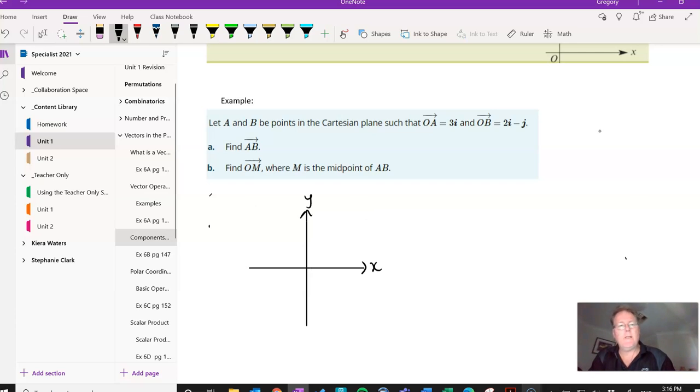First of all, we always lay the axis. So OA is 3I, so we're going to have a vector that's just in the X direction, so there'll be my A point there, vector in that direction, and that will be 3 units long. There's no J component, so there's no vertical movement.